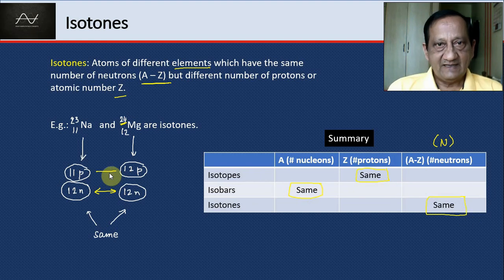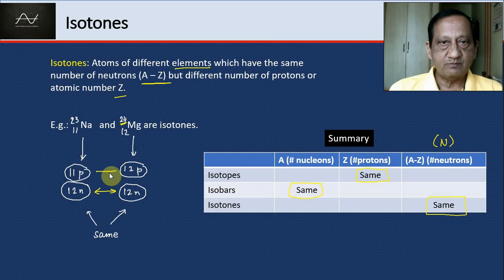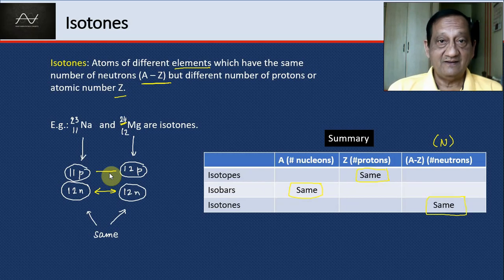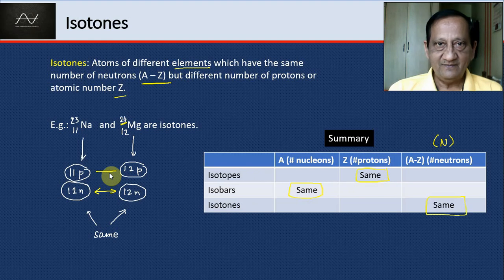That brings us to the end of the discussion of atomic structure in terms of electrons and their energy levels, the Bohr model, etc. But we are not done yet with the atom. Now we look at the nucleus. Some nuclei are unstable and spontaneously decay, releasing a lot of energy. That is called radioactivity, which will be the topic of the next session.